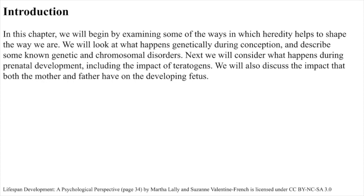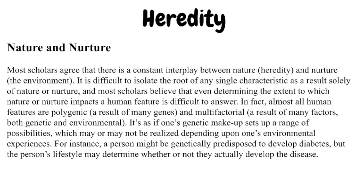In this chapter, we will begin by examining some of the ways in which heredity helps to shape the way we are. We will look at what happens genetically during conception and describe some known genetic and chromosomal disorders. Next, we will consider what happens during prenatal development, including the impact of teratogens. We will also discuss the impact that both the mother and father have on the developing fetus.